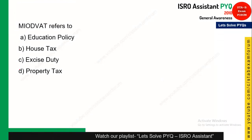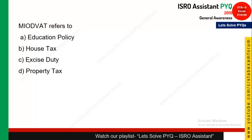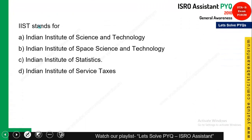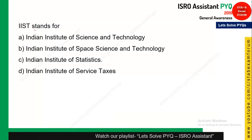MODVAT refers to Modified Value Added Tax. It is generally given on raw materials. For these particular options, raw material tax can only be imposed through excise duty, so if you have excise duty, MODVAT is also valid — option C was the right answer. The next question: IIST stands for what? IIST is in Kerala — it is the Indian Institute of Space Science and Technology, so option B was the right answer.